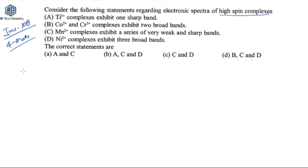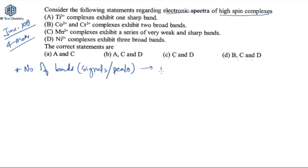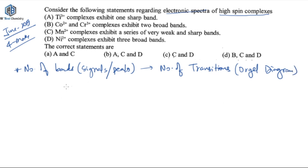If you want to find out the number of bands, signals, or peaks in the electronic spectra, that can be done according to the number of transitions. You can find the number of transitions with the help of the Orgel diagram. The number of transitions will be equal to the number of bands or peaks in the electronic spectra of the complexes.